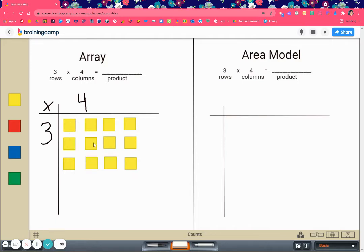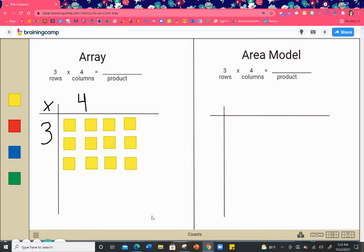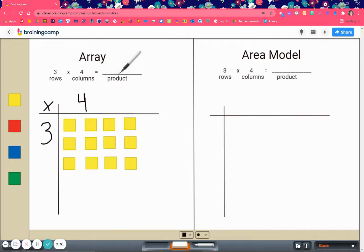Then we count all our square tiles to find our product. 1, 2, 3, 4, 5, 6, 7, 8, 9, 10, 11, 12. There are 12 total square tiles, so my product is 12. You have your 3 rows and your 4 columns. Now let's go to the area model.